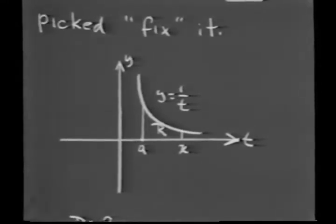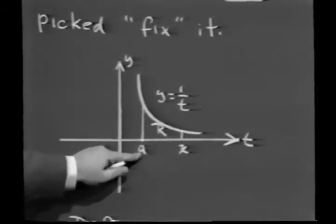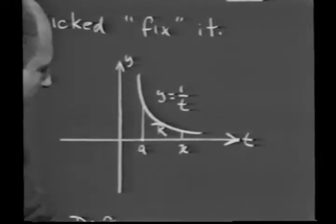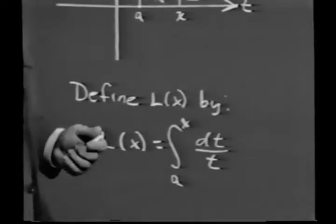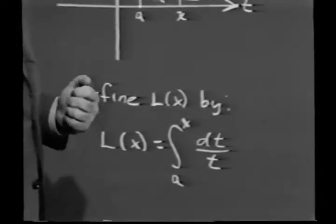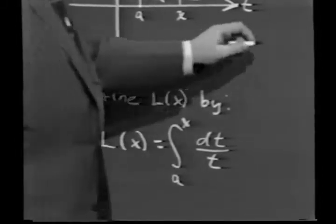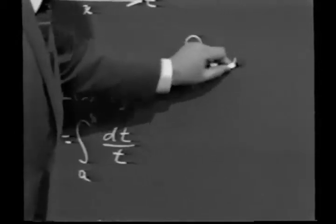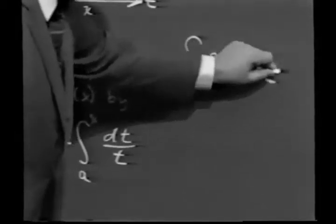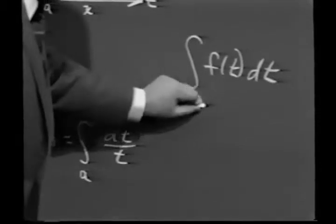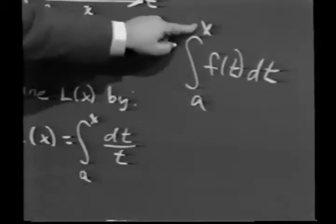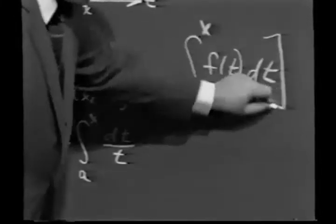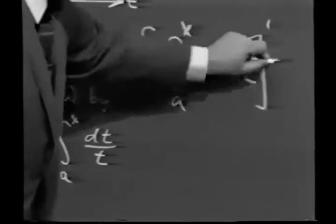Now, we've already seen that the function that we get by taking the definite integral from a to x, dt over t, has the property that its derivative is 1 over x. In other words, recall from the fundamental theorem, this is just a generalization of the fact that if f of t is a continuous function, then the integral from a to x, f of t dt, is a function of x. And its derivative with respect to x is just f of x.